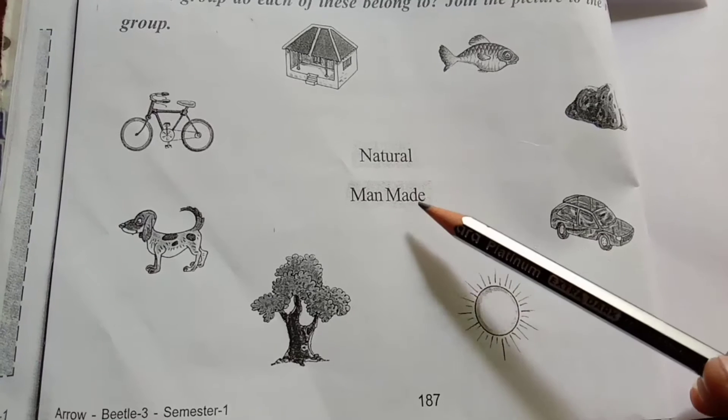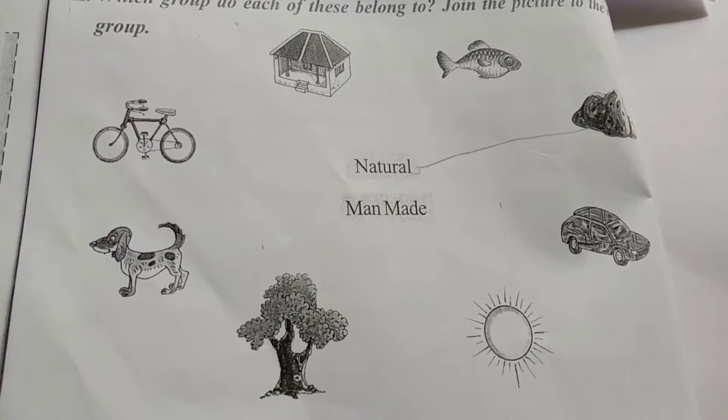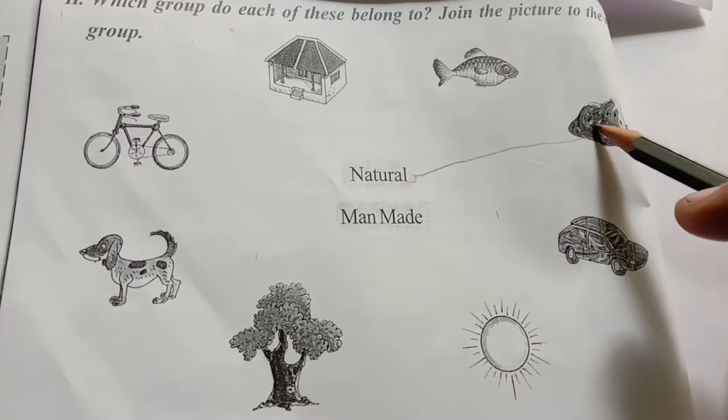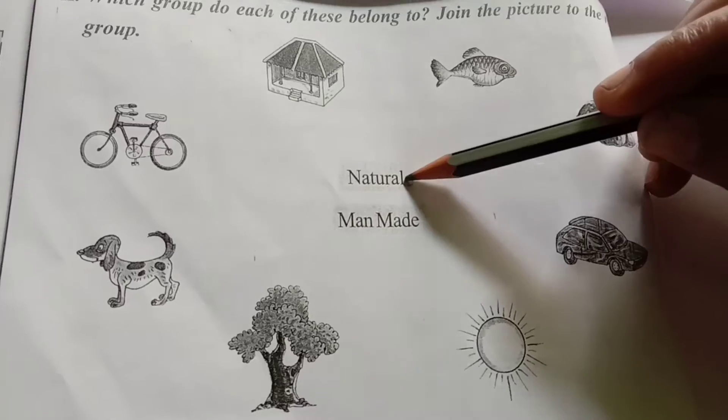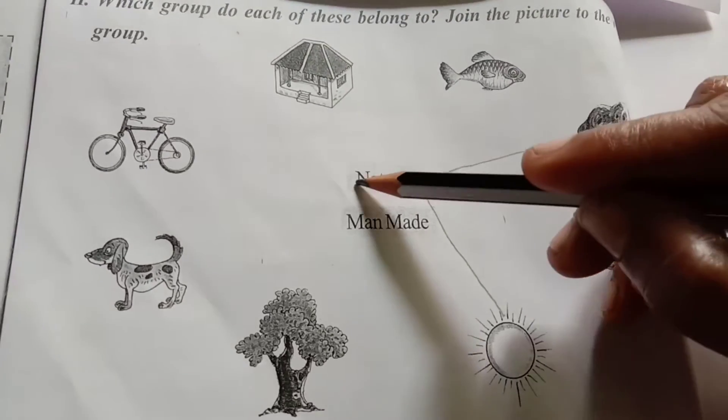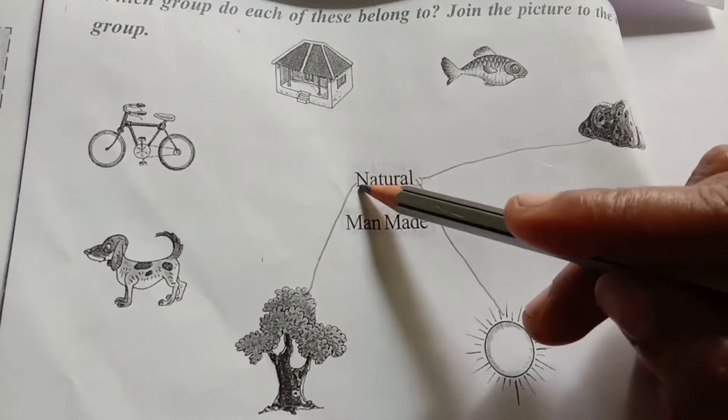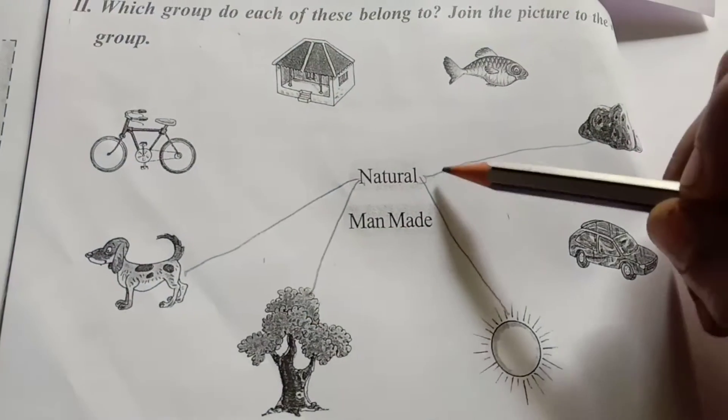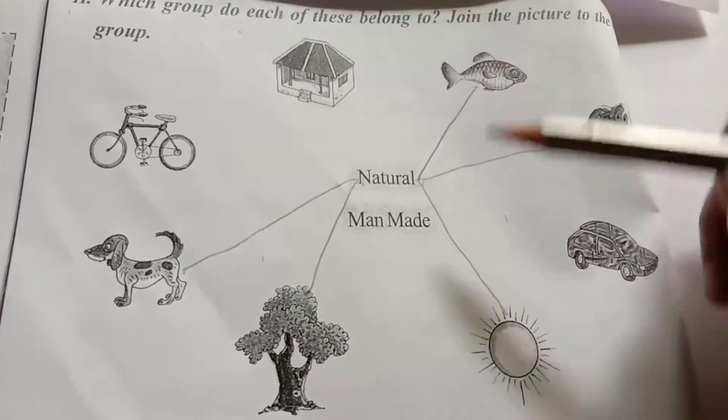Which things are natural? Which things are man-made? Rocks are natural things. Next, sun is natural things. Next, trees is natural things. Next, dog is natural things. Fish also natural things.